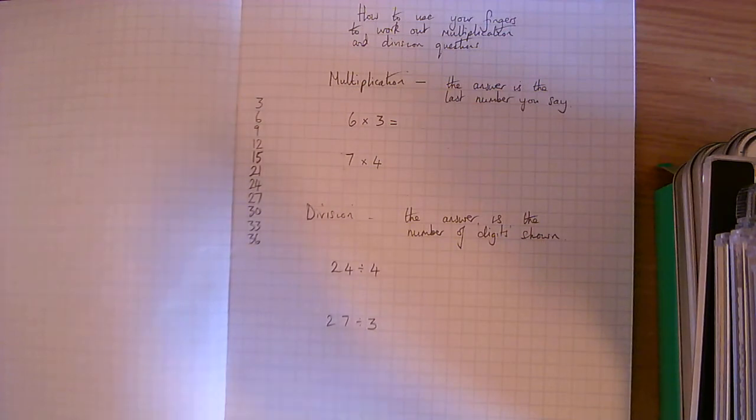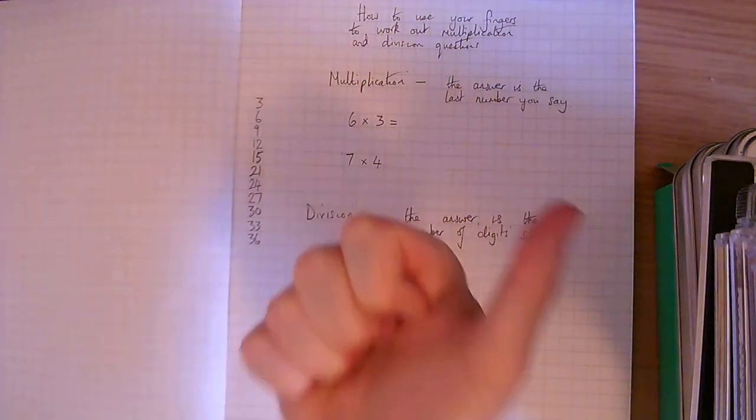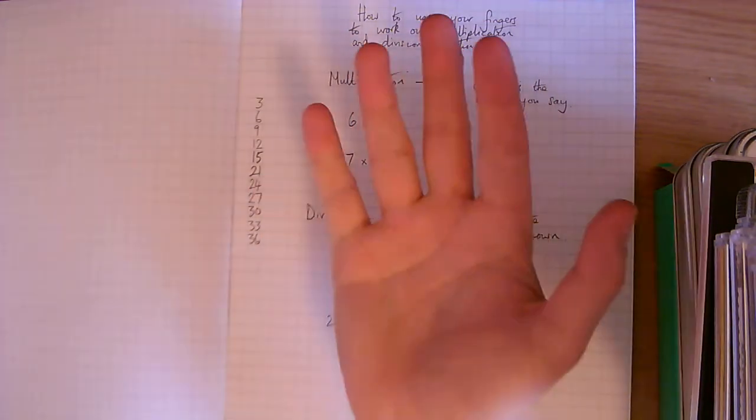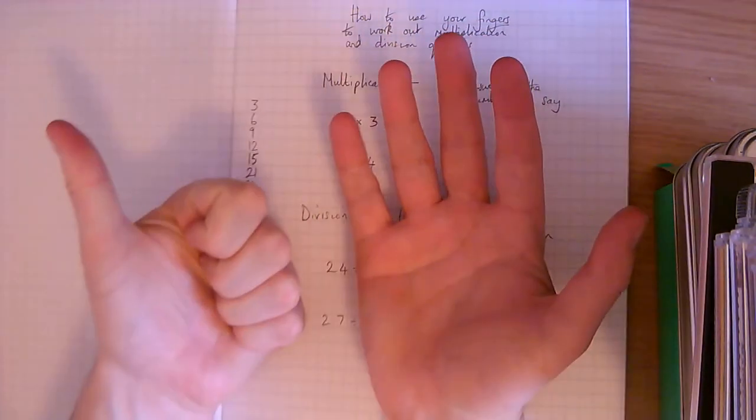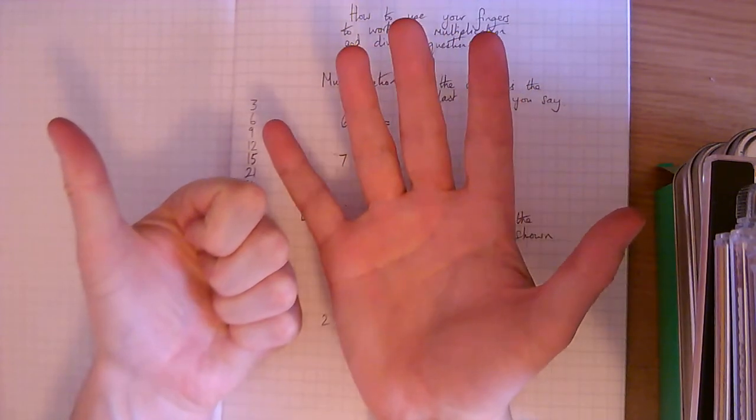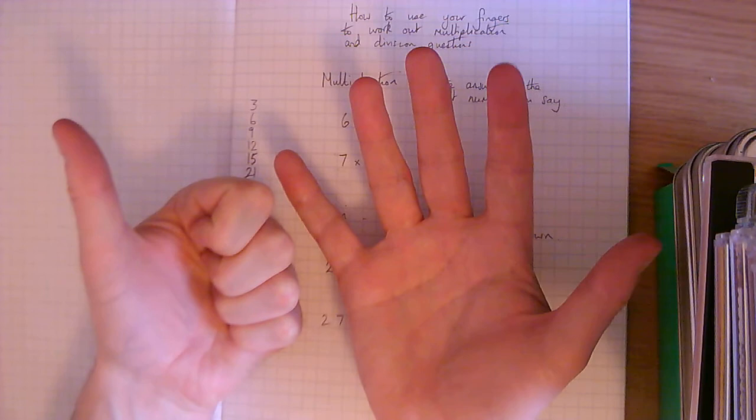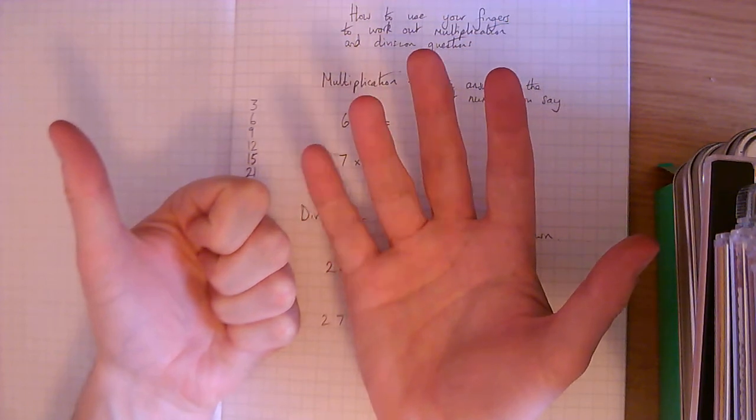3, 6, 9, 12, 15, 18. So that's my 6th digit. So 6 times 3 is 18. 3, 6, 9, 12, 15, 18.